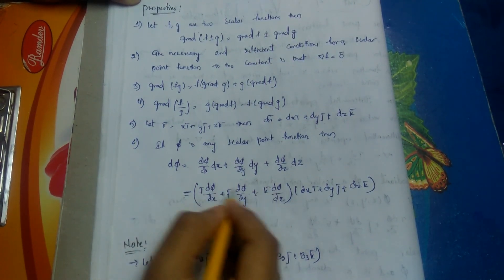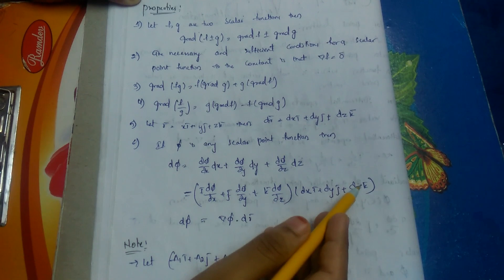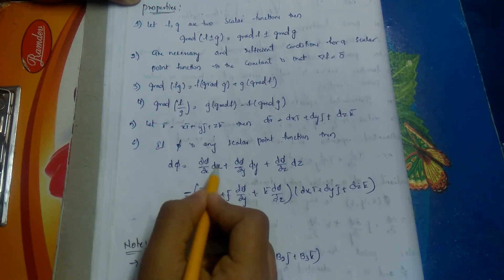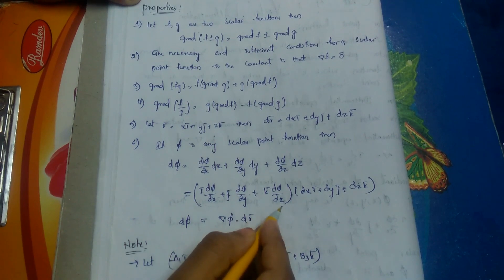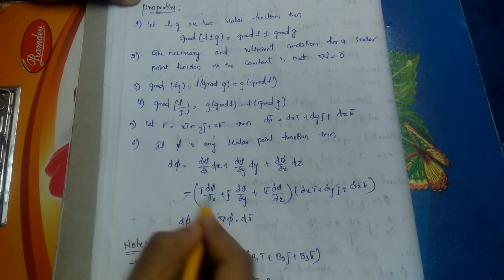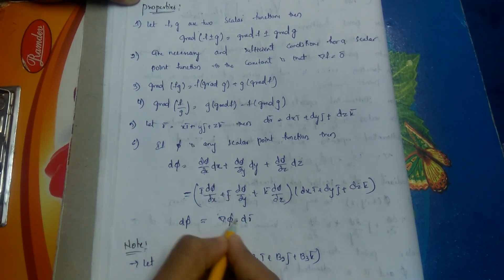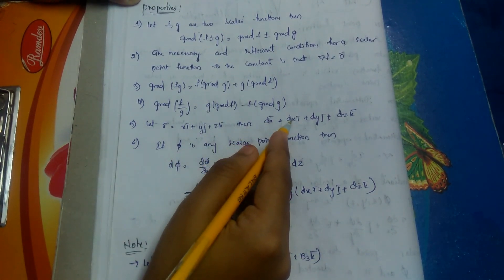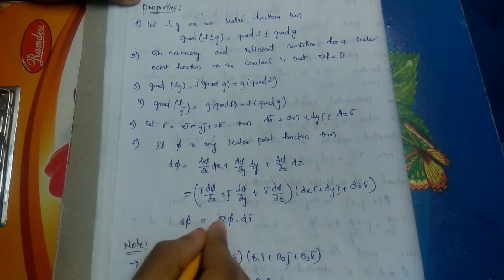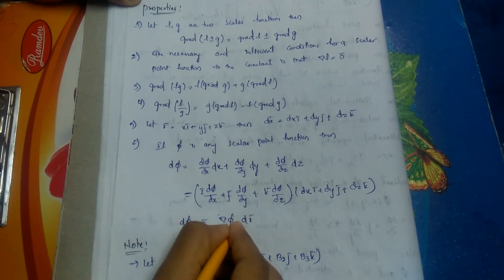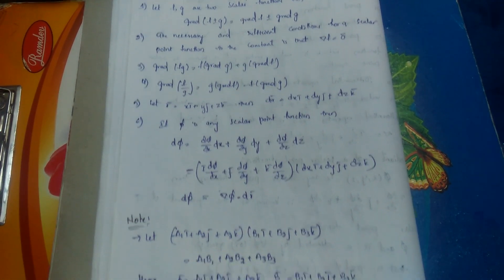This can be written as (∂π/∂x·i-bar plus ∂π/∂y·j-bar plus ∂π/∂z·k-bar) dotted with (dx·i-bar plus dy·j-bar plus dz·k-bar). Since i-bar·i-bar equals 1, j-bar·j-bar equals 1, and k-bar·k-bar equals 1, the first term is del π and the second is dr-bar. So dπ equals del π dot dr-bar.